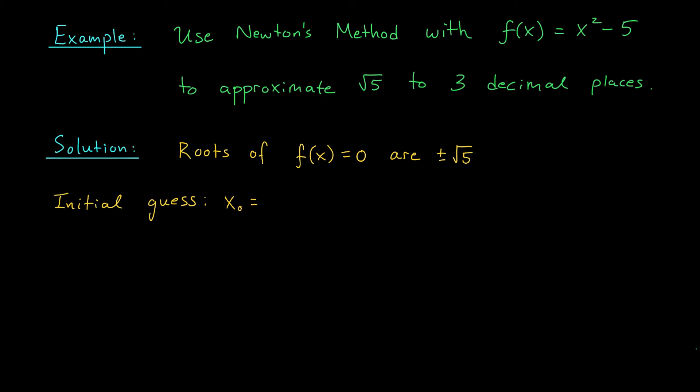From this starting point, we can get a better approximation for our root using our formula from Newton's method. The formula says that x n plus 1 is x n minus f of x n over f prime of x n. So once again, we'll need the derivative of our function. The function here is pretty simple. f of x equals x squared minus 5. So the derivative f prime of x is simply 2x.